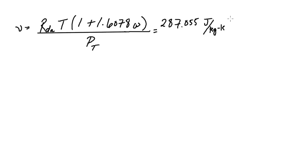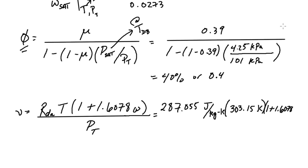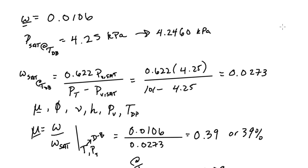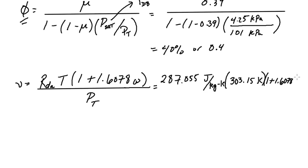And we have T, which needs to be in absolute units. That's an important part of this. So this is at 303.15 Kelvin multiplied by 1 plus 1.6078 and that is multiplied by our specific humidity ratio, which was 0.0106.